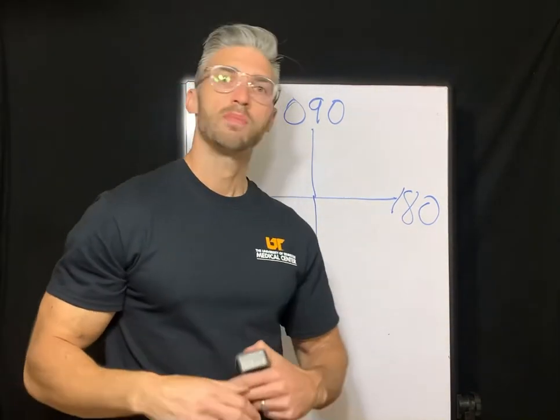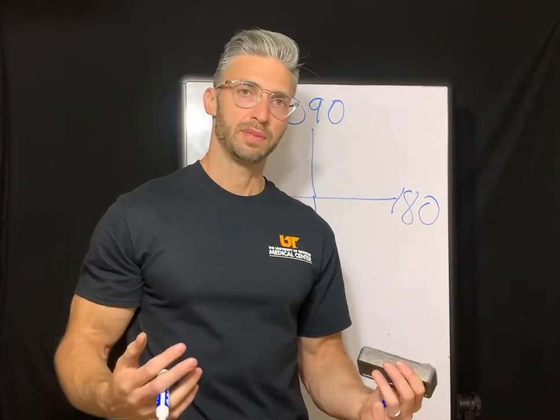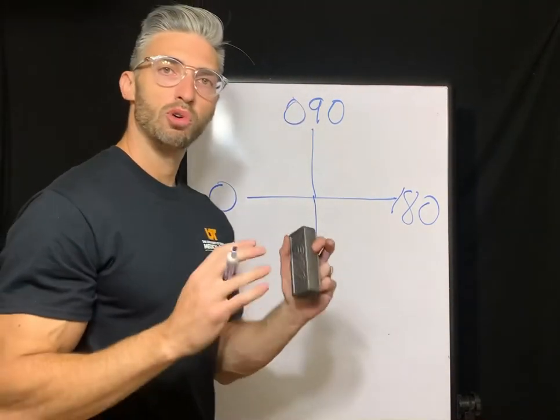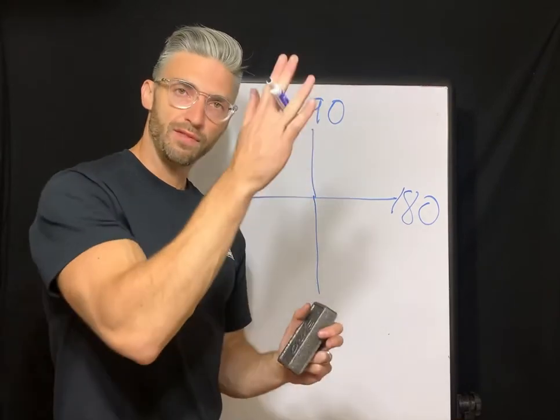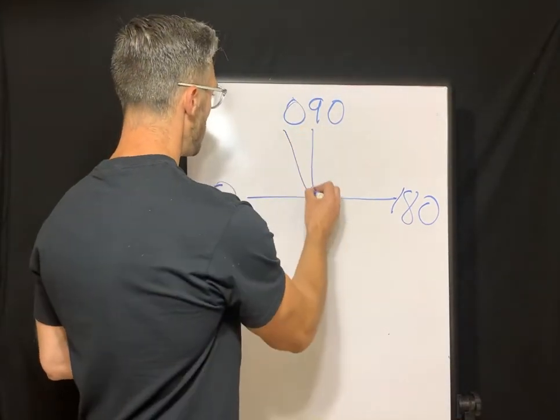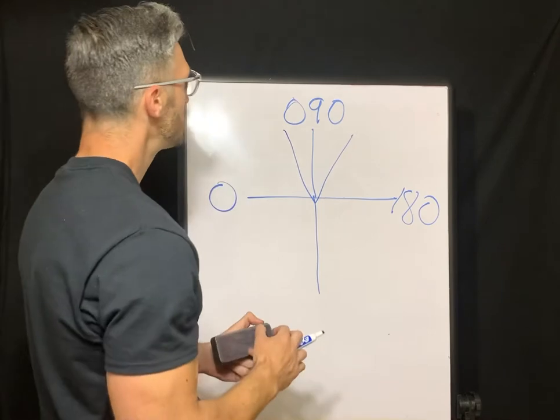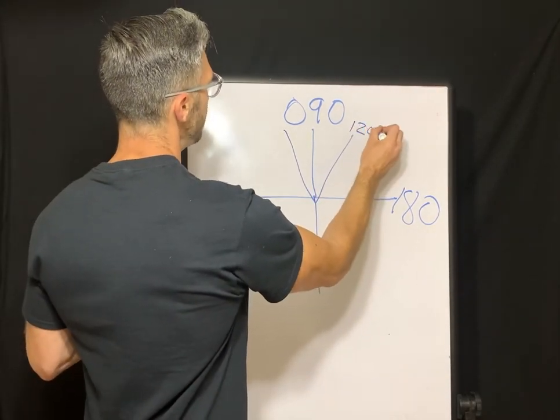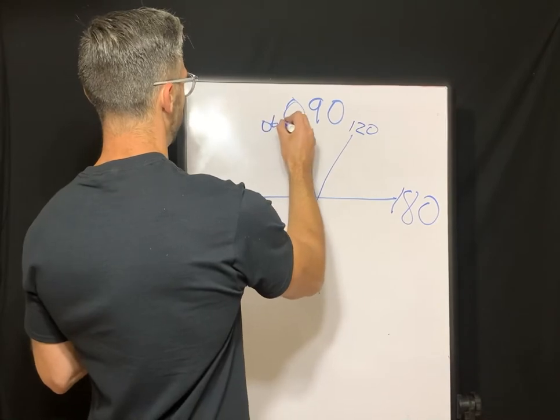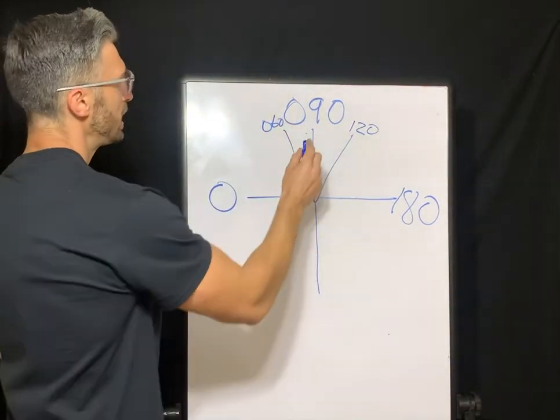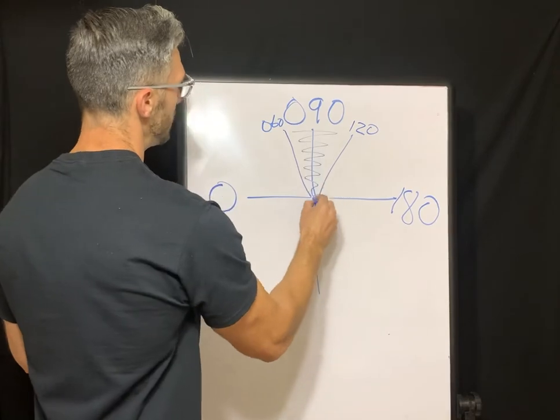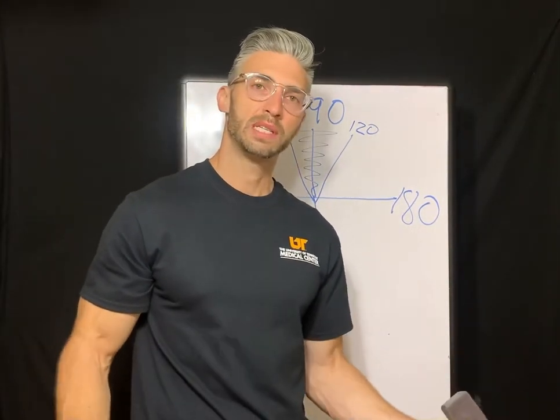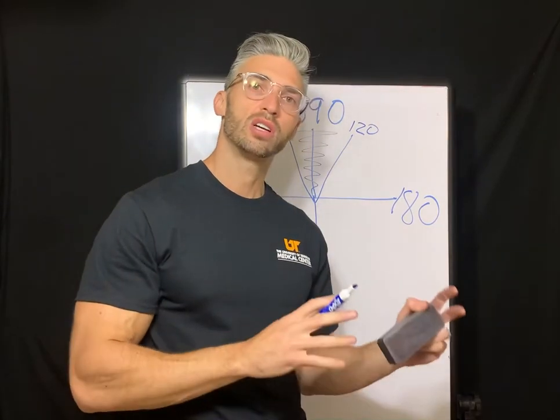So let's start with just talking about with the rule astigmatism. With the rule astigmatism, our steepest meridian is along the vertical, the 90, or within 30 degrees of it. So within 30 degrees of 90, you have 120 and then 60. So if your vertical meridian is steepest in that zone, you classify it as with the rule astigmatism.